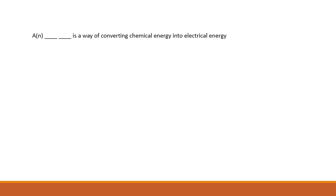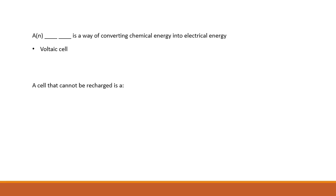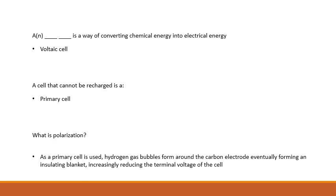The voltaic cell is a way of converting chemical energy into electrical energy. A cell that cannot be recharged is a primary cell. What is polarization? As a primary cell is used, hydrogen gas bubbles form around the carbon electrode, eventually forming an insulating blanket, increasingly reducing the terminal voltage of the cell.